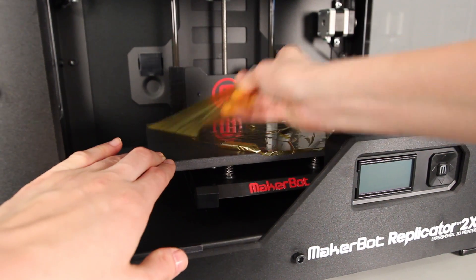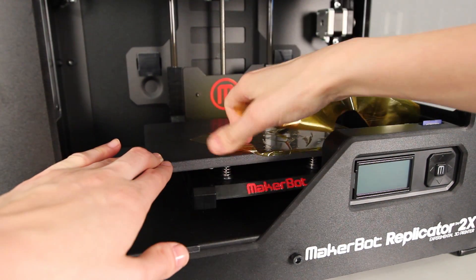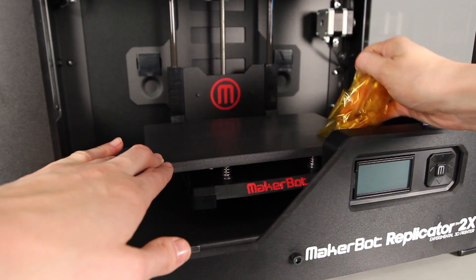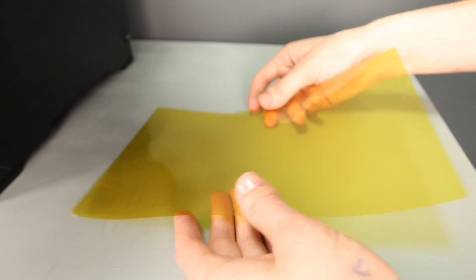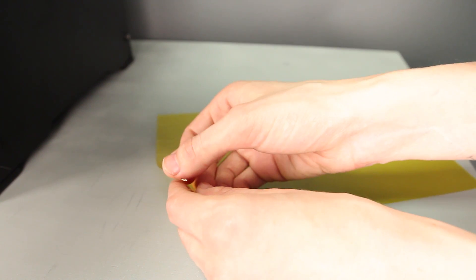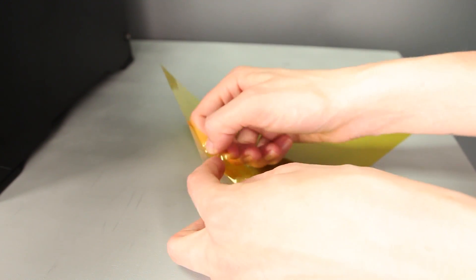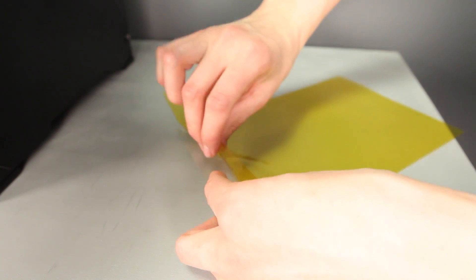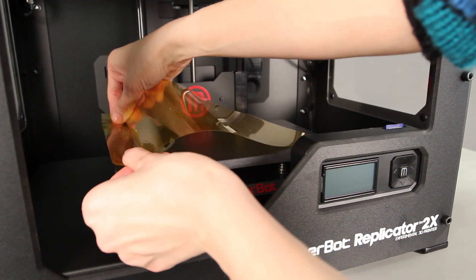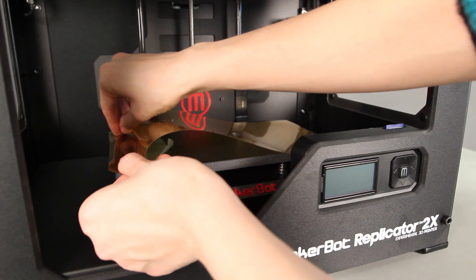Begin by peeling off the old tape and discarding it. Now take out one of the die-cut sheets of Kapton tape that came in your customer kit. Peel back the plastic backing on one of the shorter edges of the sheet about a quarter of an inch. Lay the exposed bit of Kapton tape along one of the short sides of the build plate.